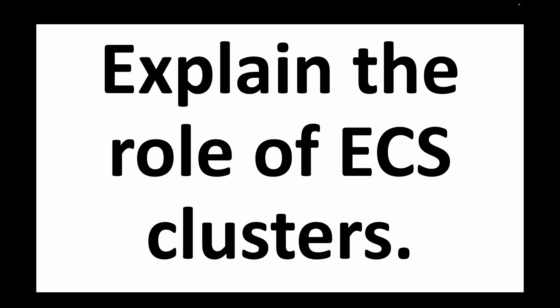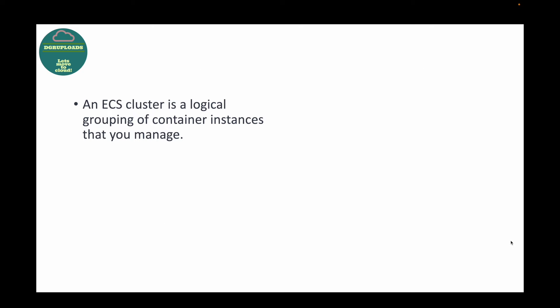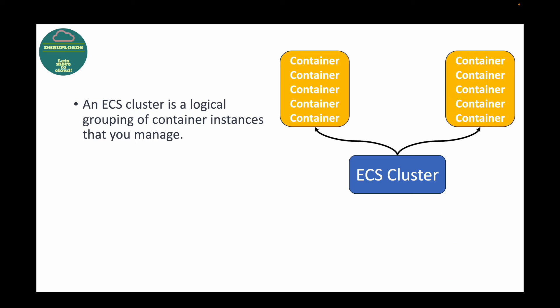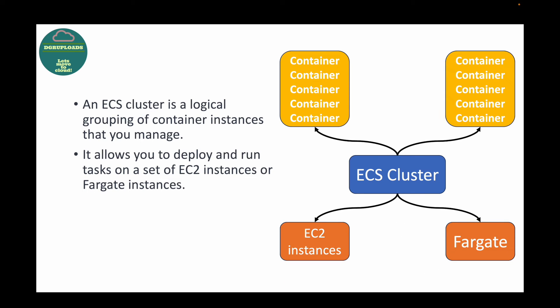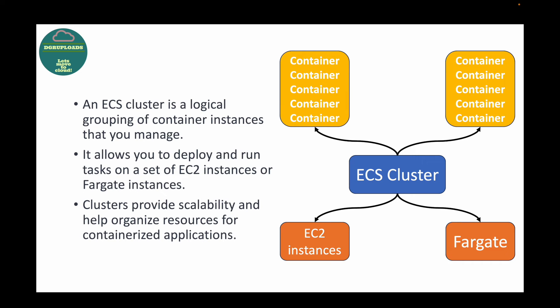The next question is: explain the role of an ECS cluster. When working with ECS, the first thing we do is create our cluster. A cluster is a logical grouping of your containers which helps you manage container instances and deploy and run your containers on EC2 instances or Fargate. When creating a cluster, you specify whether you want to go with Fargate (serverless) or EC2 instances. Clusters provide scalability and help organize your resources. If you have multiple applications, it is recommended to have different clusters acting as logical groupings to isolate applications.